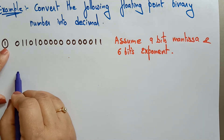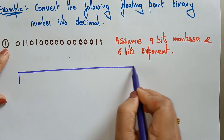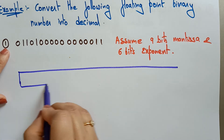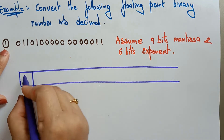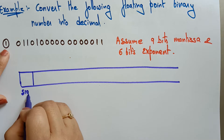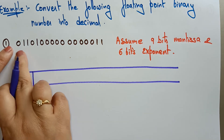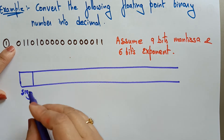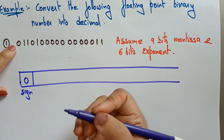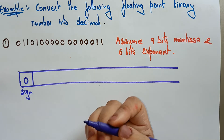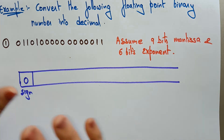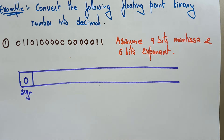What is the format? The first bit always indicates the sign bit. If it is one, it is a negative number; if it is zero, it is a positive number. Here the sign bit is zero, so we are going to get a positive decimal fraction.